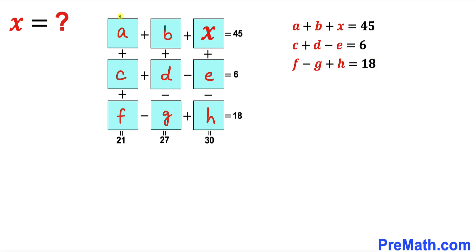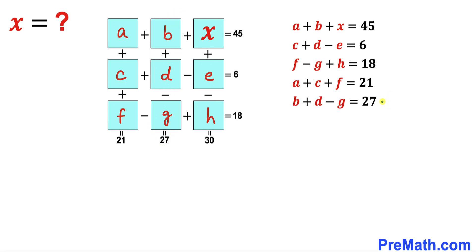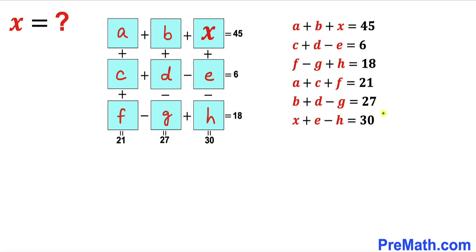Now let's combine the columns. The first column gives us a plus c plus f equals 21. The next column gives us b plus d minus g equals 27. And finally the third column gives us x plus e minus h equals 30.